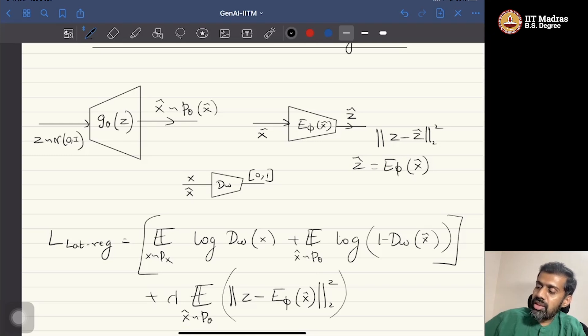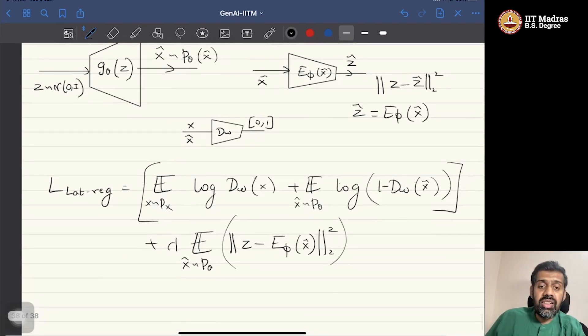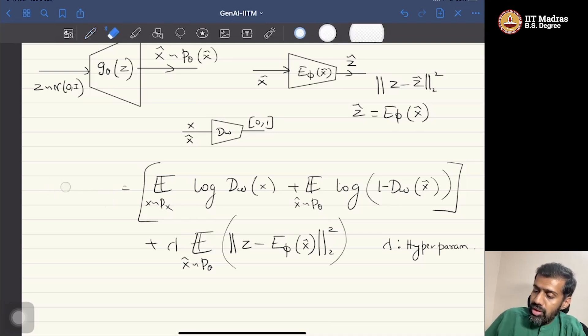So this is one term that is simply added for the GAN training, where lambda is a hyperparameter that would tell you how to weigh the particular losses. So this particular loss also has three components to it: theta, the generator parameters, the discriminator parameters, and the regressor parameters.